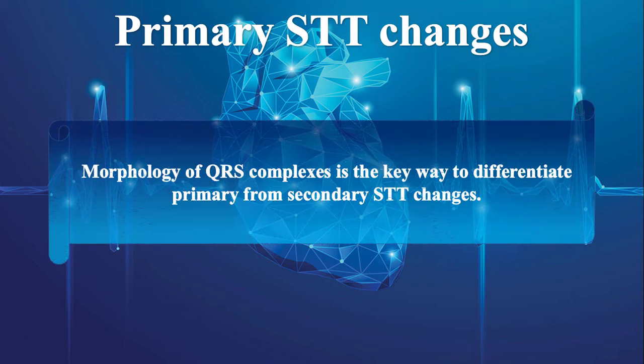In summary, morphology of QRS complexes is the key way to differentiating primary from secondary STT changes. Wide or tall QRS complexes with discordant STT changes favors the secondary type, while any STT changes in presence of normal QRS complex is the so-called primary type.